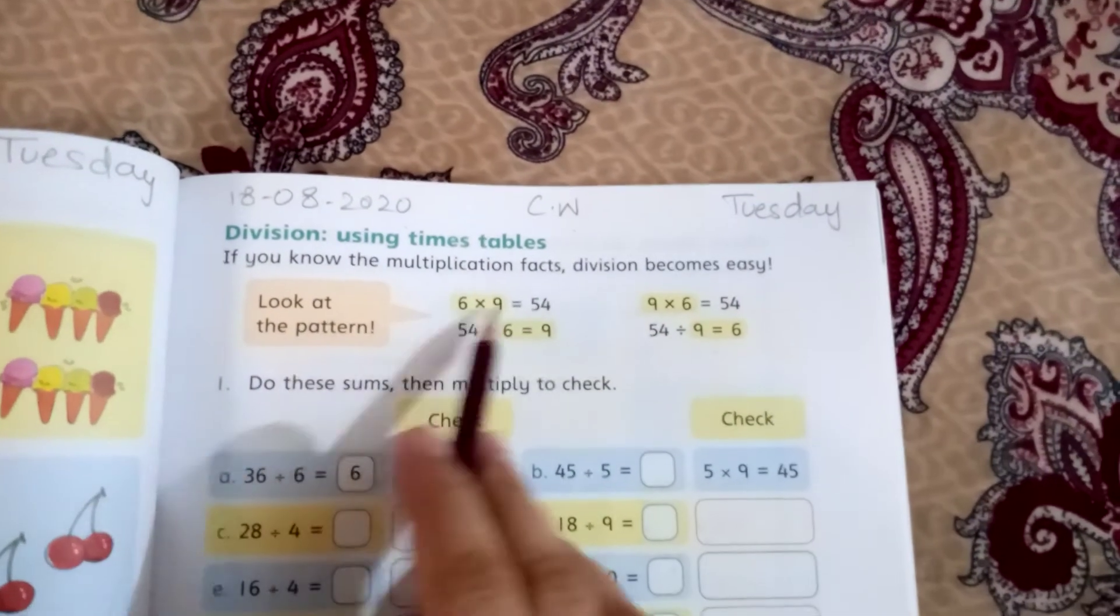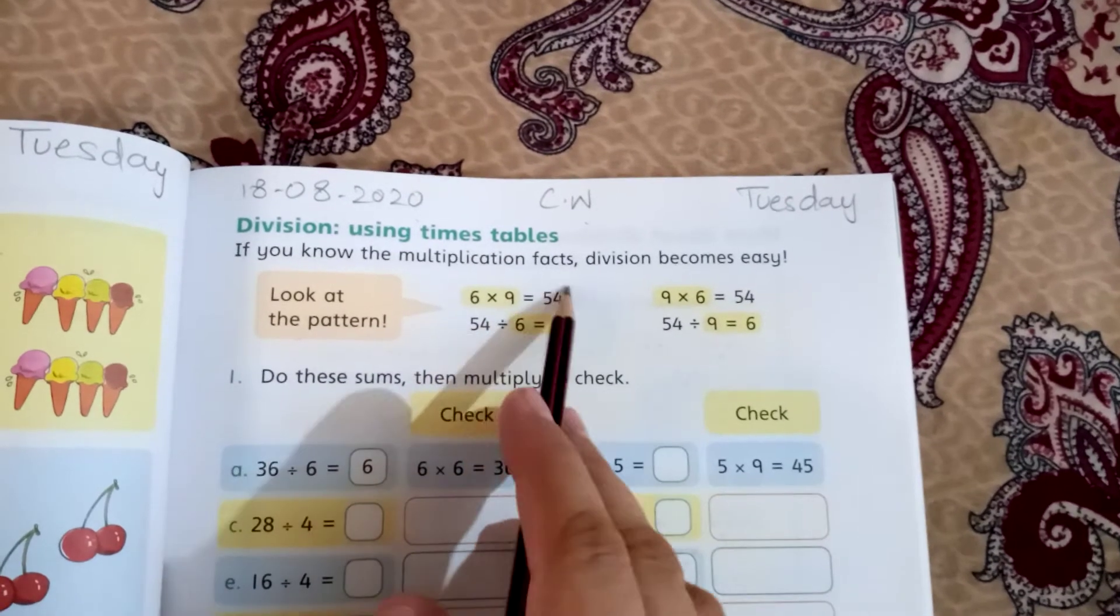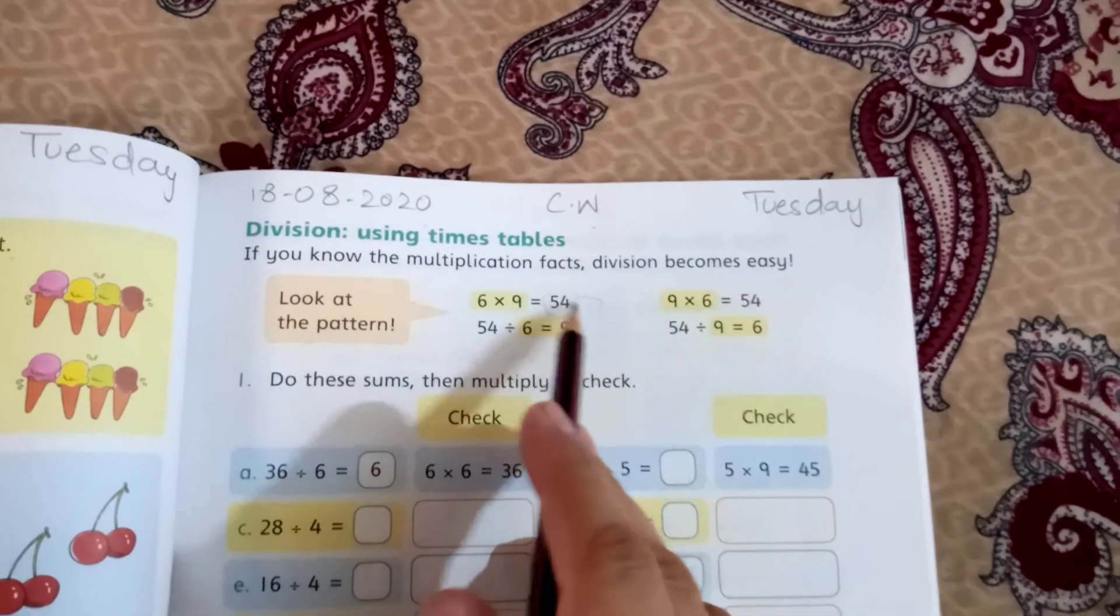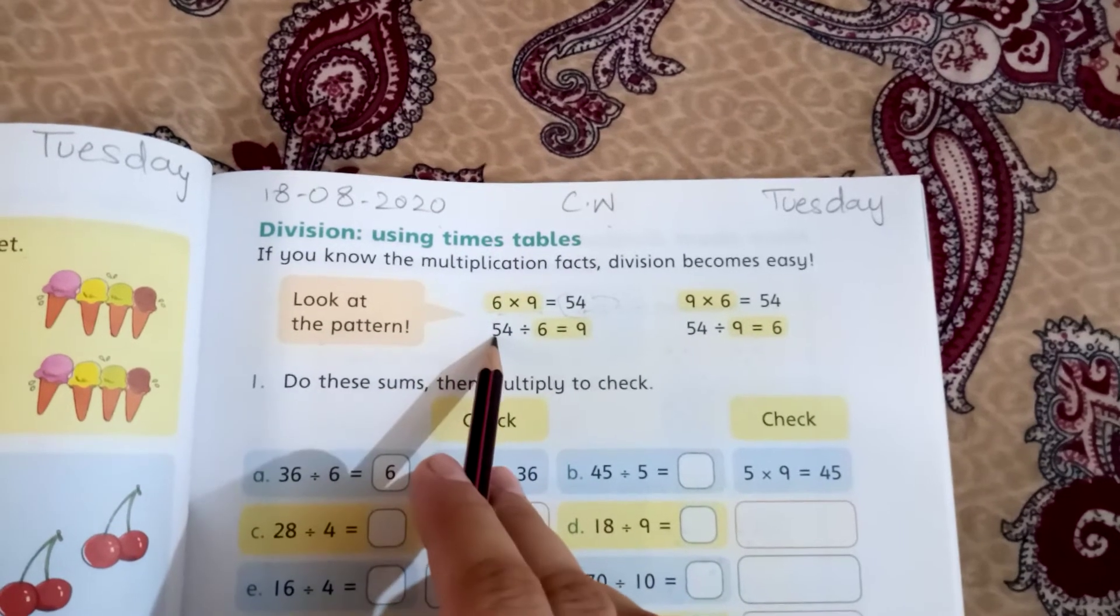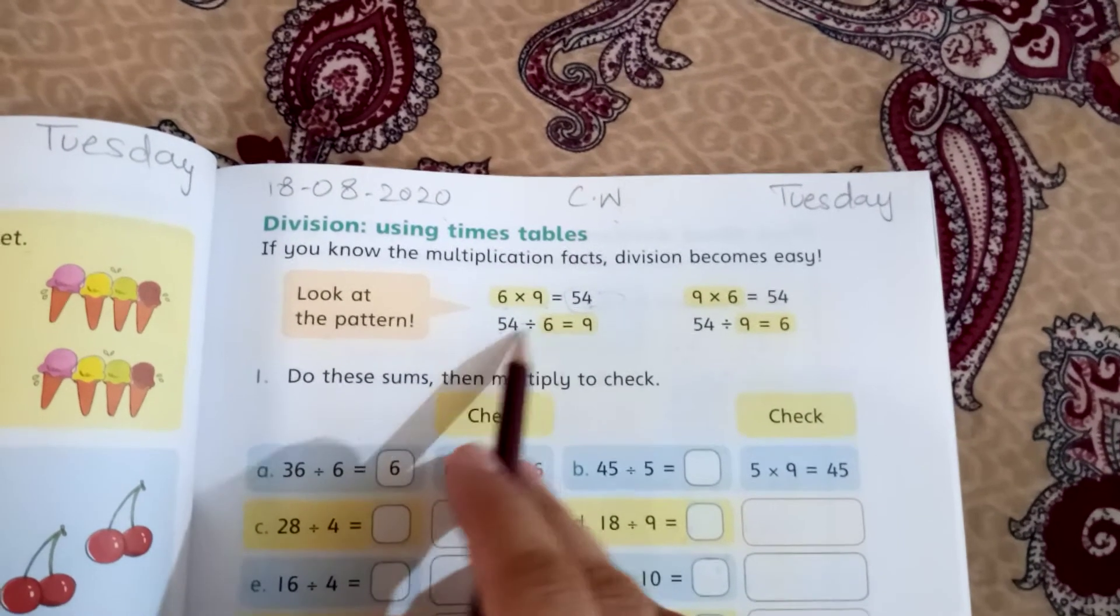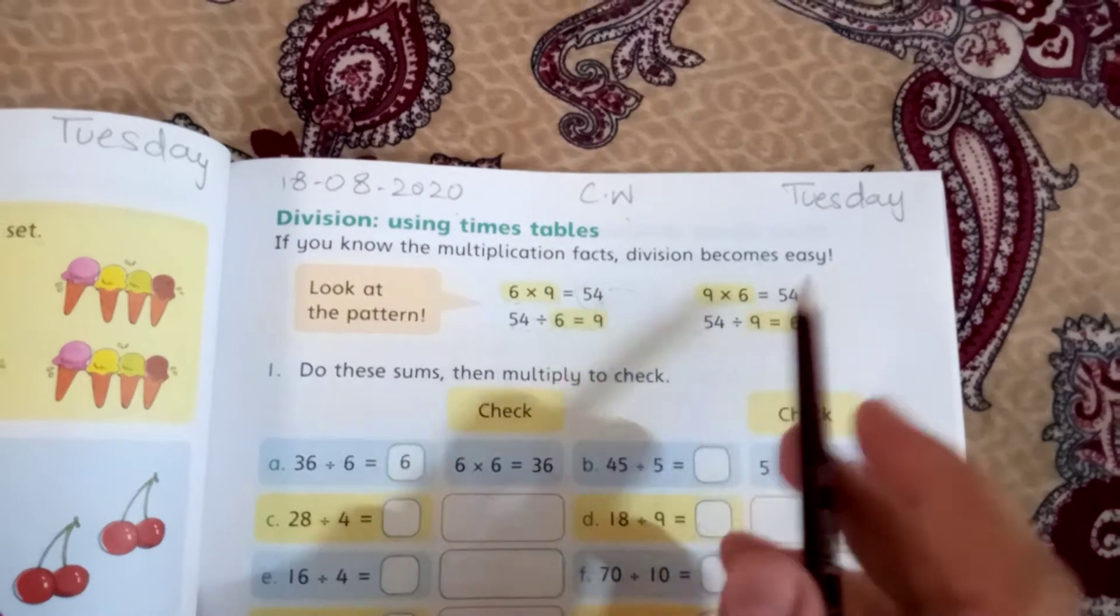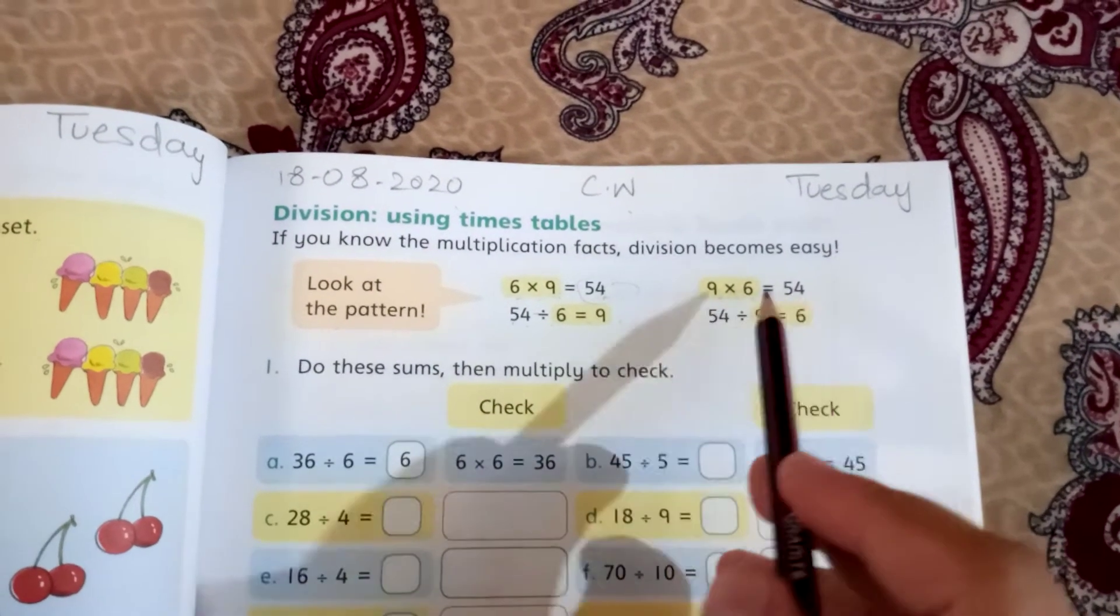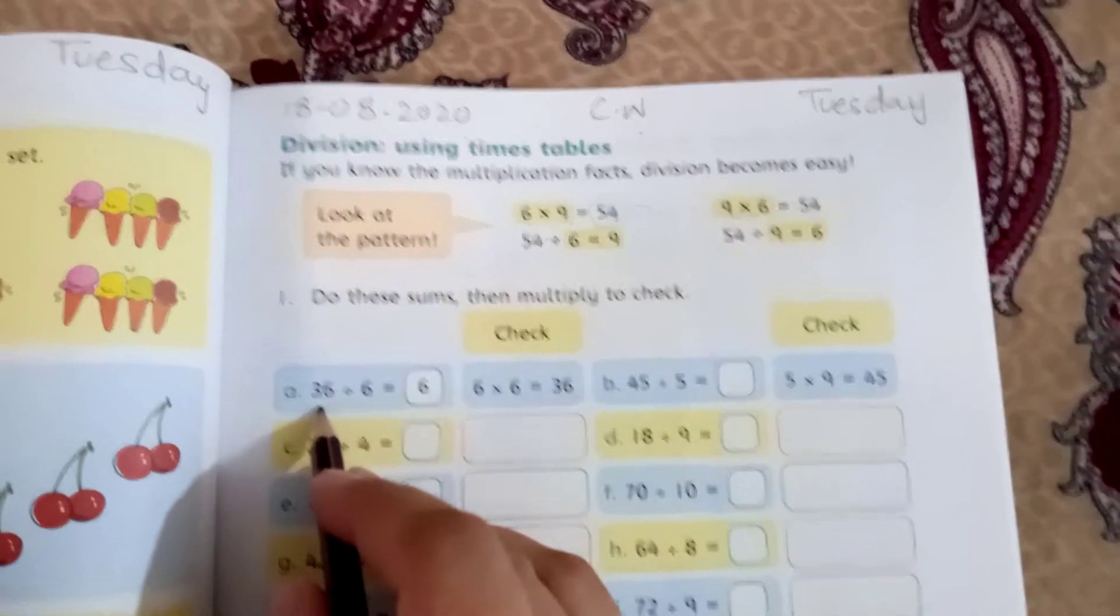Check the pattern. This is 6 multiply by 9 equals 54. If you have 54 divided by 6, the answer is 9.